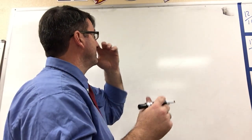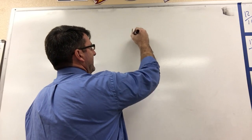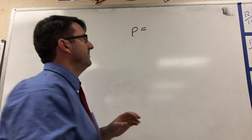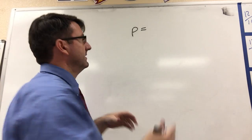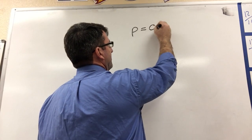Alright, so first we need to define P. P is the probability of getting a winning lid. So we're told that that's 0.25.